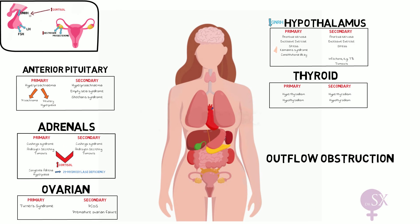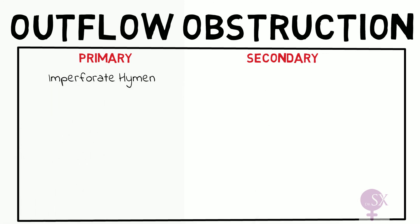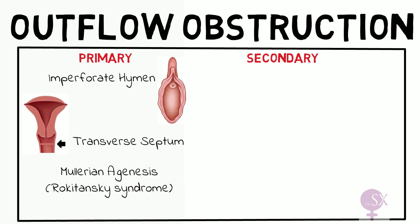Lastly, we have outflow obstruction causes of amenorrhea. Looking at causes of primary amenorrhea first: we have an imperforate hymen, where the hymen covers the entire opening of the vagina and blood from menses collects above it. These patients can develop a haematocolpos — an accumulation of blood in the vagina. Treatment involves a small cut to open the hymen and allow drainage. We also have a transverse vaginal septum, a wall of tissue running horizontally across the vagina blocking drainage, requiring a small surgery. A rare cause is Müllerian agenesis, also referred to as Rokitansky syndrome, where patients have no female organs as the Müllerian duct does not develop, and therefore they never get a period.